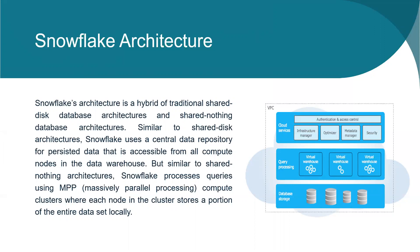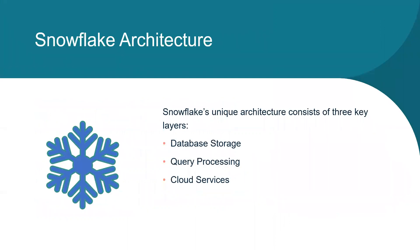This approach offers the data management simplicity of a shared-disk architecture but with the performance and scale-out benefits of a shared-nothing architecture. The key difference between MPP and SMP is that in MPP, resources are not shared with other resources, whereas in SMP they are shared. Snowflake's unique architecture consists of three key layers: database storage, query processing, and cloud services.